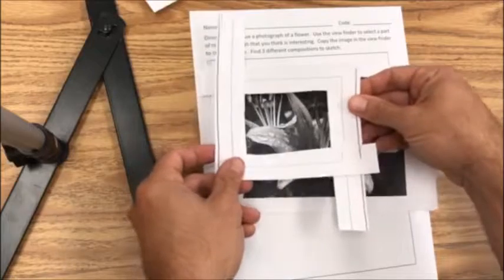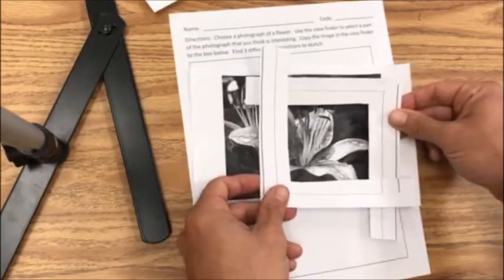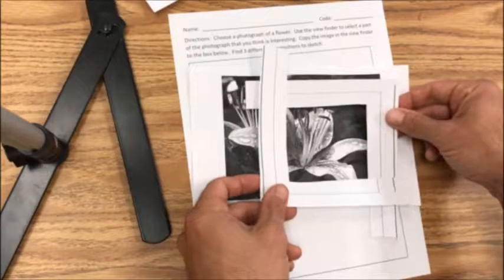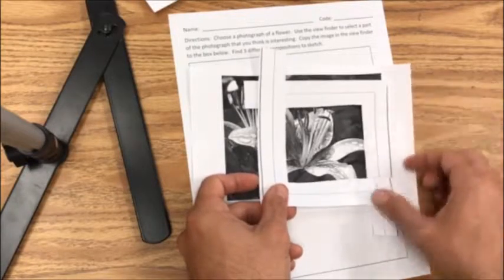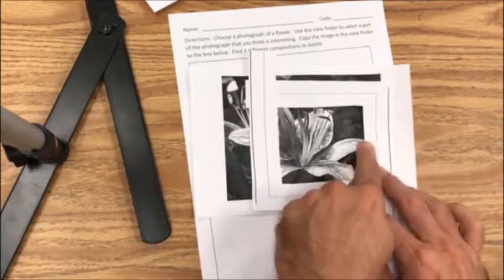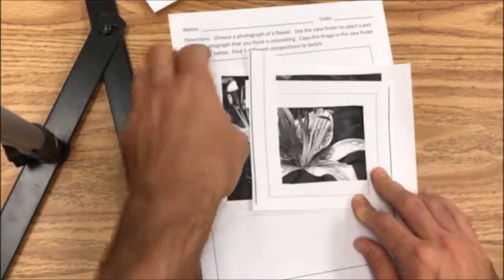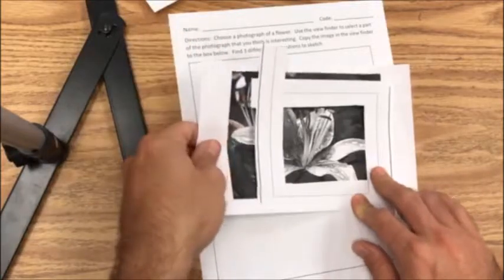I'm going to move my viewfinders around the picture to try to find an interesting composition or arrangement. I think I like the way this looks. I notice that some of the petals extend off of the paper and that's fine. That's called cropping.